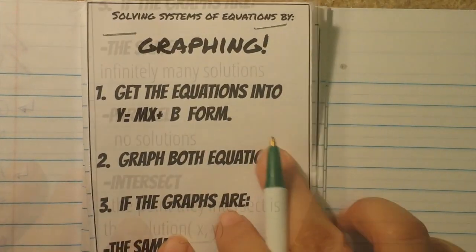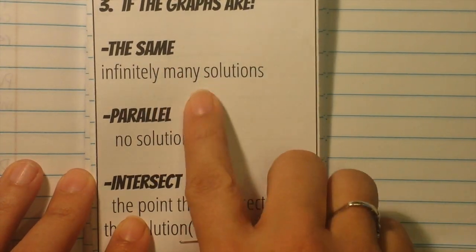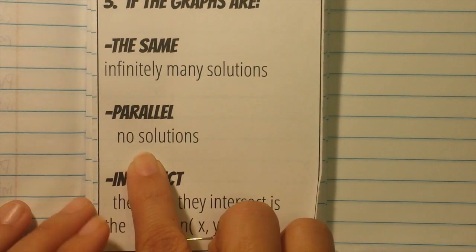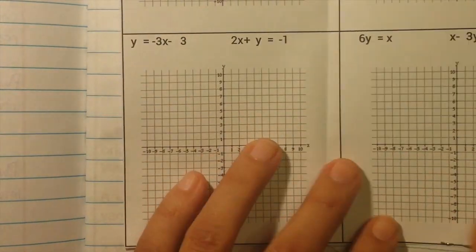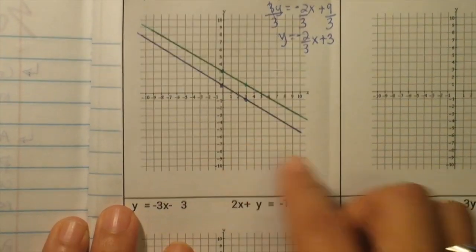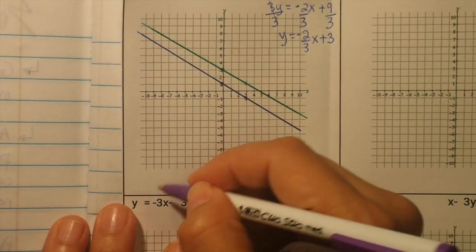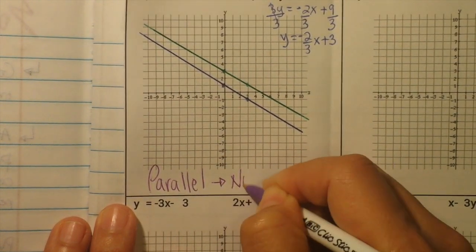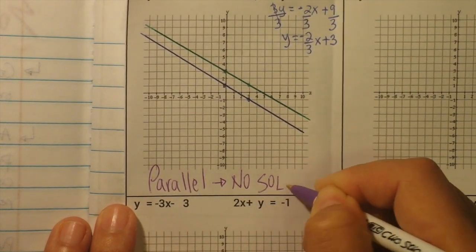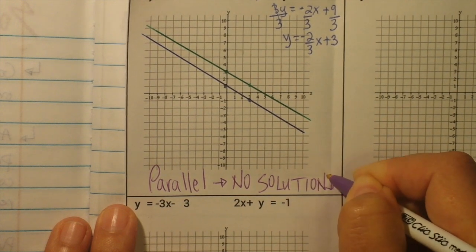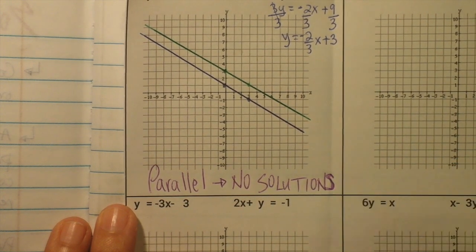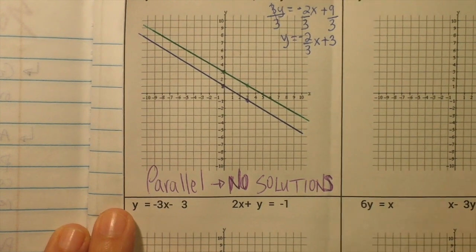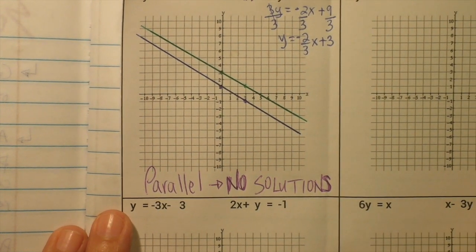Those two lines are parallel. If the graphs are parallel, they have no solutions. For the listening check, color in your y equals mx plus b equations: y equals negative 2 over 3x plus 1, and y equals negative 2 over 3x plus 3 — the two equations we just graphed.